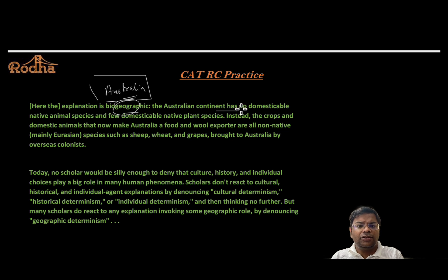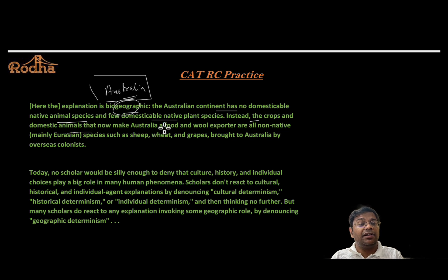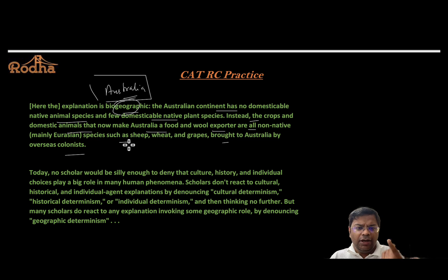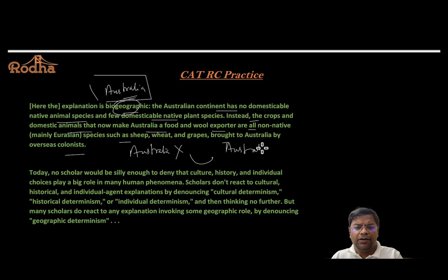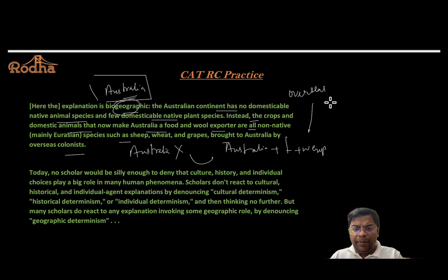The Australian continent has no domesticable native animal species and few domesticable native plant species. Instead, the crops and domestic animals that now make Australia a food and wool exporter are all non-native — brought to Australia by overseas colonists. So Australia initially had nothing domesticable, but is now a food and wool exporter thanks to what colonists brought in.